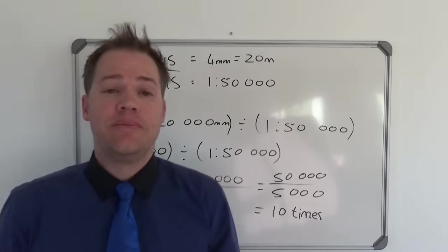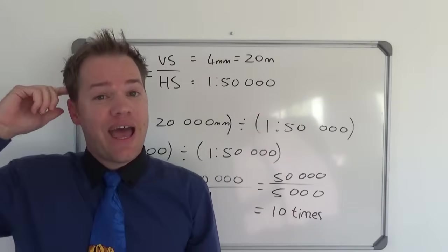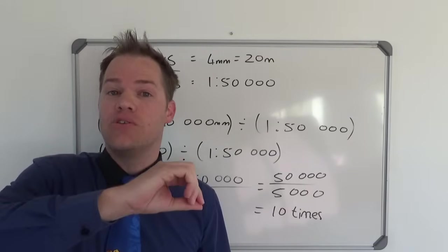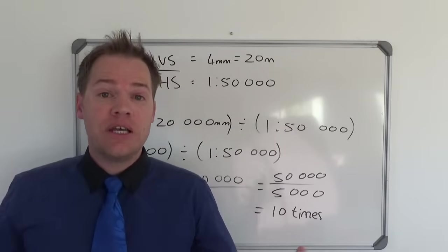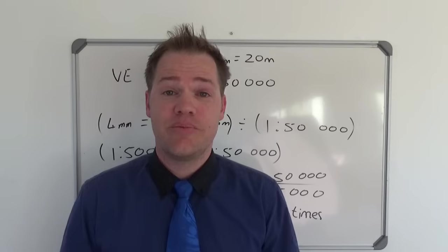So what does this mean? It simply means that the vertical scale has been exaggerated 10 times so that we'll be able to see those mountains and hills and slopes and valleys and so on. So this is how simple it is.